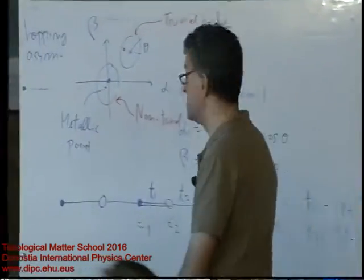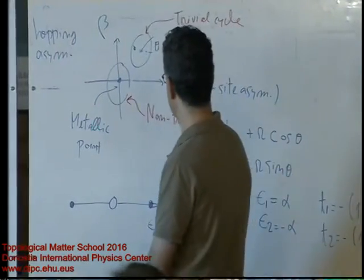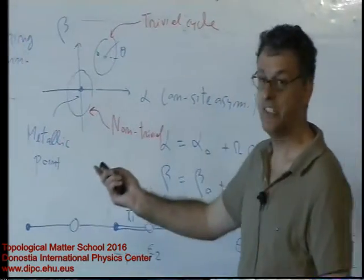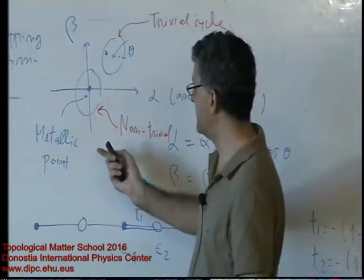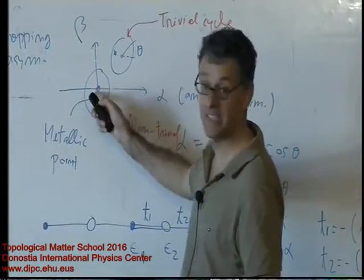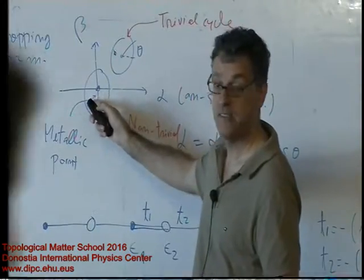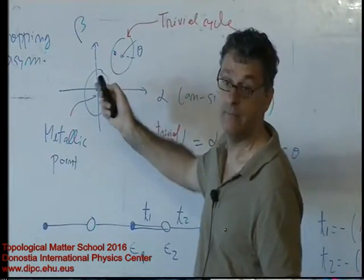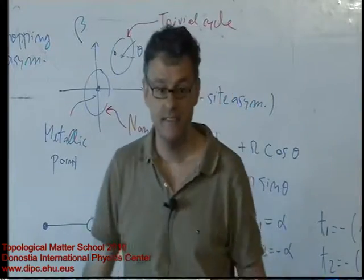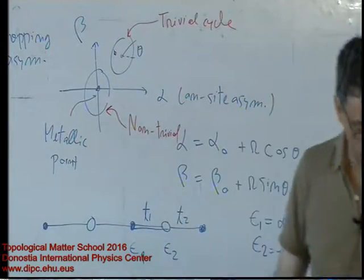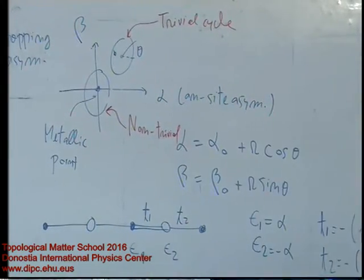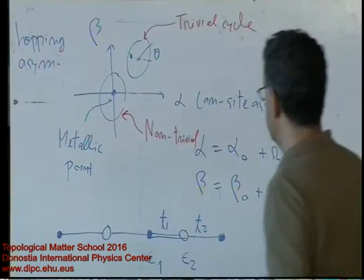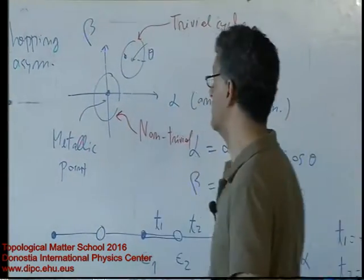What is the difference between these two cycles? Essentially, as you probably guessed, is that this one encircles a metallic point and this one doesn't. That's one of those deep things that one can understand better as we go along, and it was mentioned yesterday.